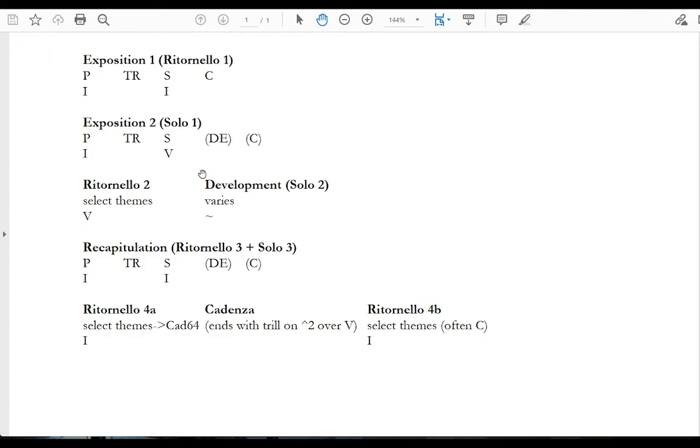At the development, as with most developments, there's a number of things that can happen. Oftentimes, the development will quote a few themes from the expositions, but often not all of them. Occasionally, new material will be introduced into the development, though again, that's not a strict requirement. The development usually primarily features the soloist, but given the fragmentary nature of a development, there's often a little bit more back and forth between soloist and orchestra than in some of the other sections.